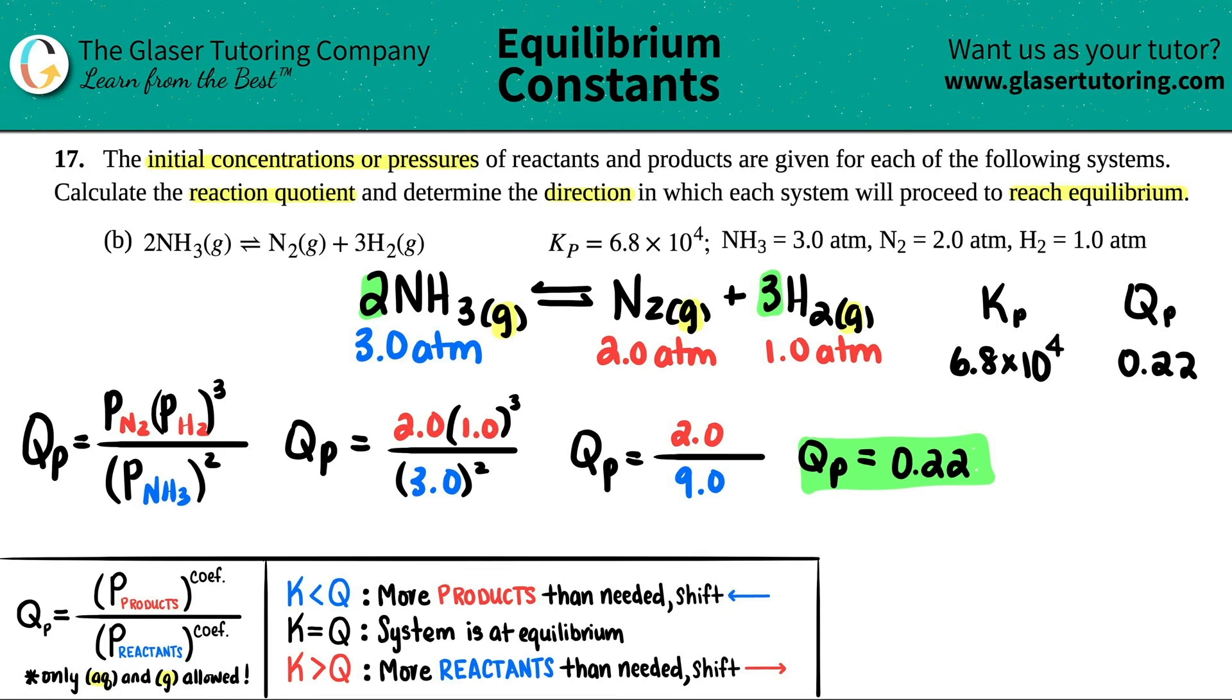We can also do the trick. If I link this up and say that Kp is greater than Qp because this number is greater than this number, and I wrote down what each one means. If the K is greater than the Q, you have more reactants than needed right now. You have way more reactants than you should have, so you're going to go this way.